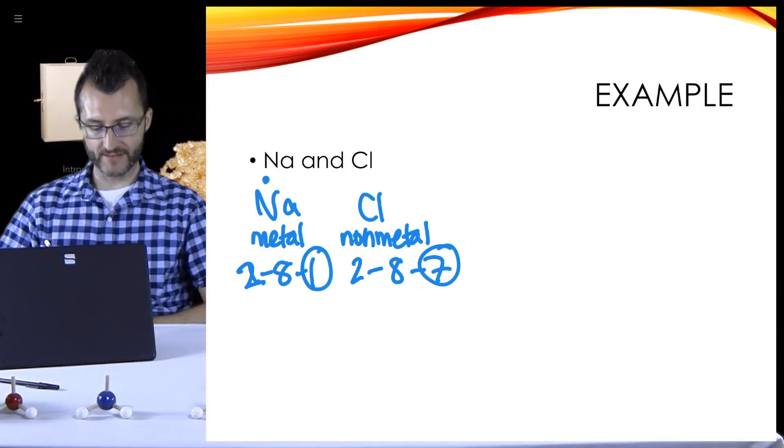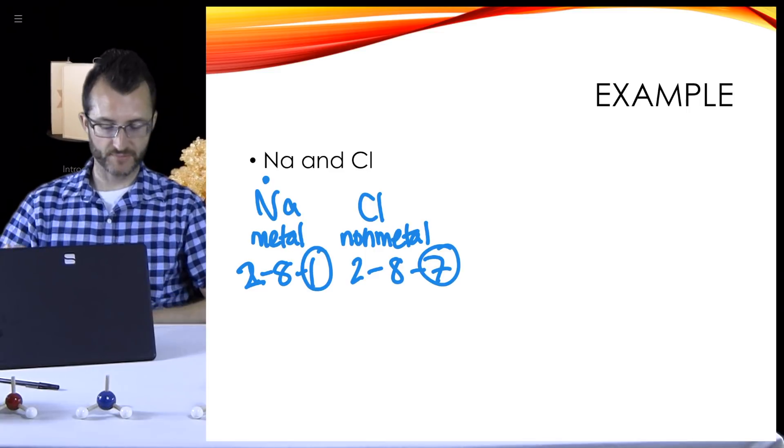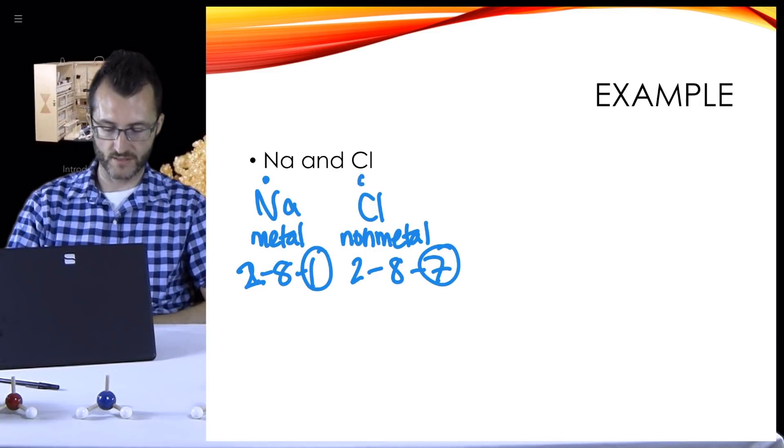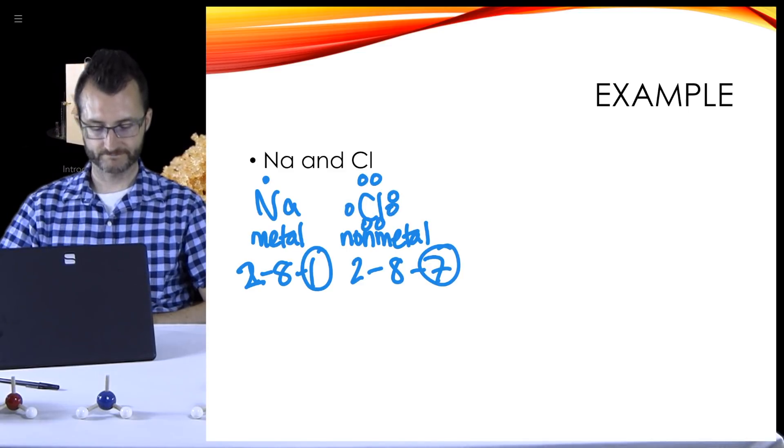When we're drawing the Lewis structures for a compound, we want to get the ones for the individual elements first. So what would the Lewis structure look like for sodium? I want to look at the valence electrons. Na would have one valence electron, so I'm going to have one dot on top for Na.